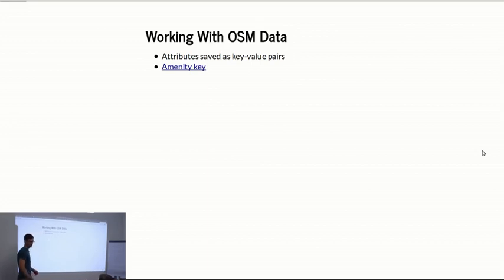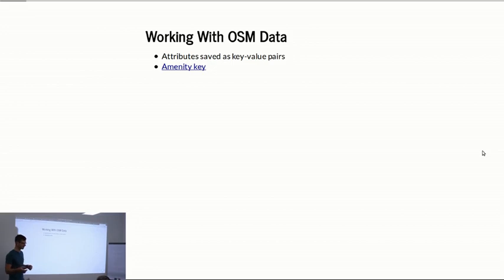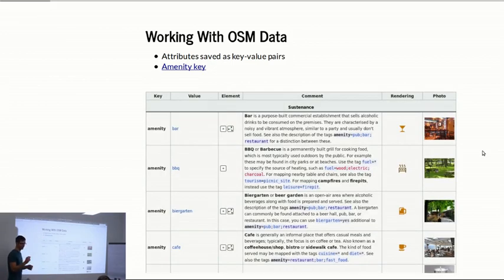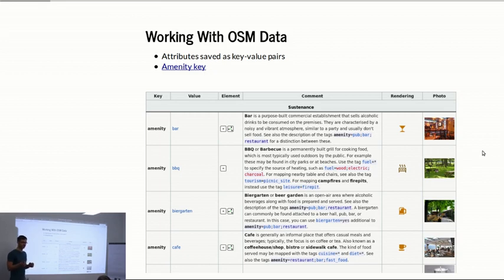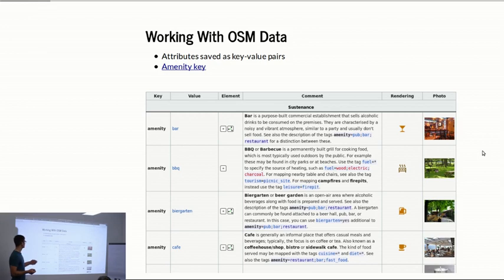As Jakob said, there are different tags that you can use. For example, one tag that is common is the amenity tag. In OpenStreetMap, as you saw before, you have key-value pairs. For each key you can have some value. One very common key is the amenity key. As you can see, there are a lot of things like beer garden, cafe, barbecue, bar, parking spot, whatever.